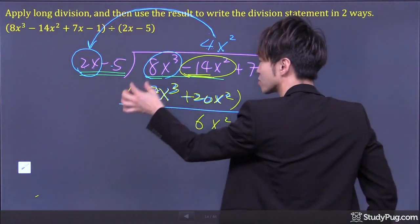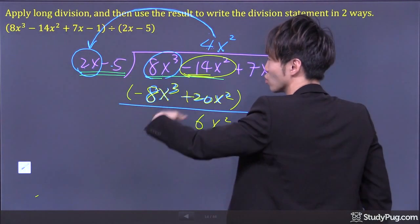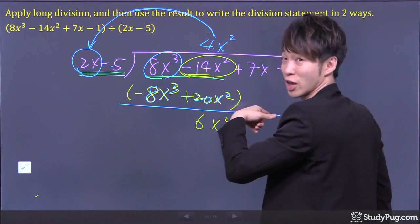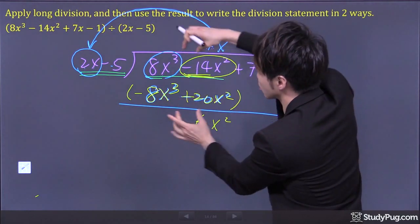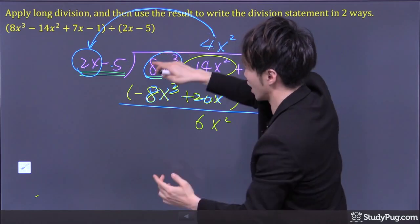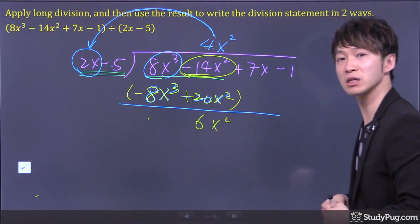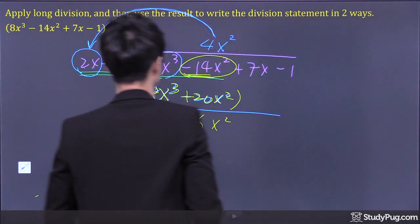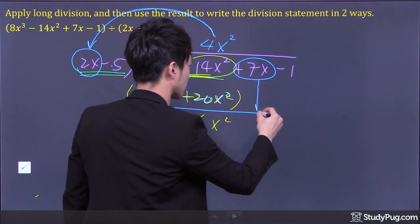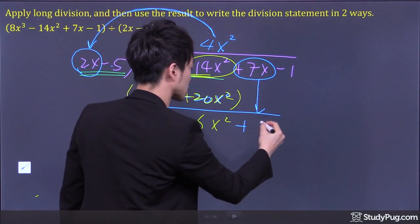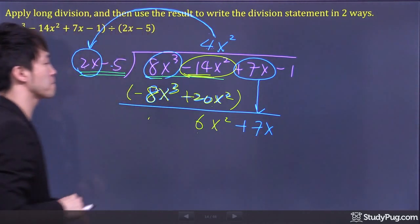By bringing the negative sign in, we no longer have to worry about subtraction — we can just do addition, just combine terms. Now we bring down one term: positive 7x. Because the divisor has two terms, we always maintain two terms here as well.